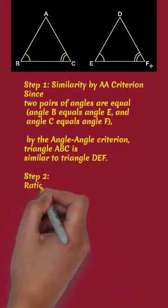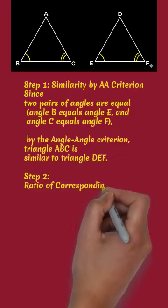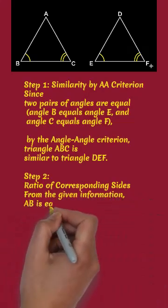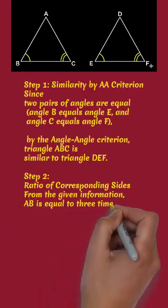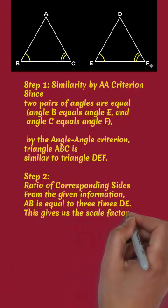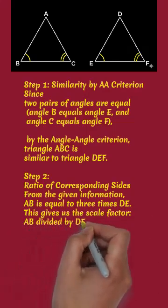Step 2: Ratio of corresponding sides. From the given information, AB is equal to 3 times the length of DE. This gives us the scale factor.